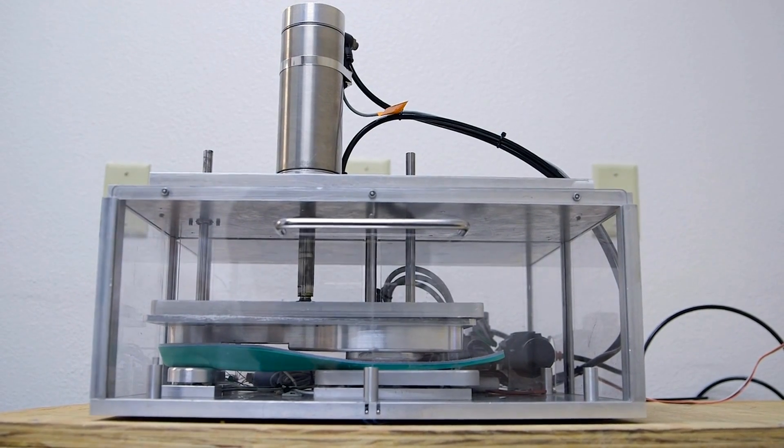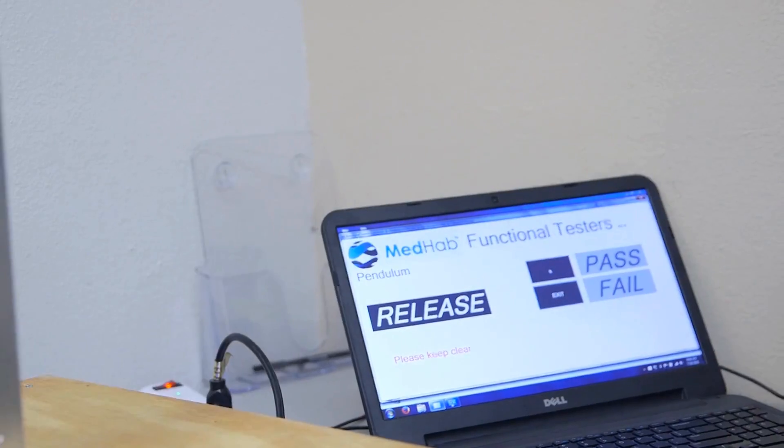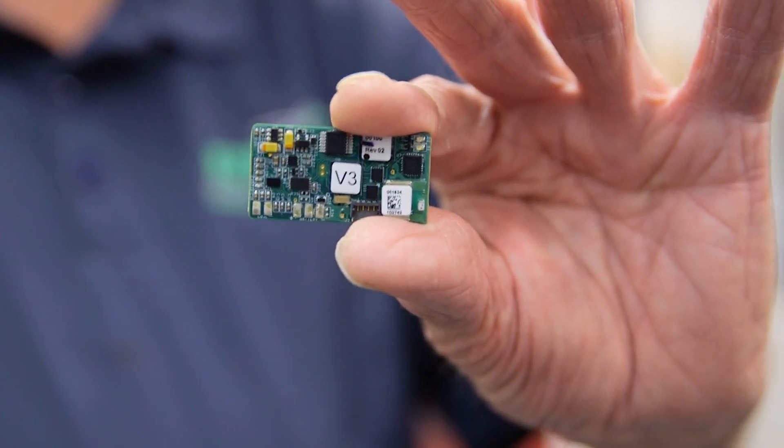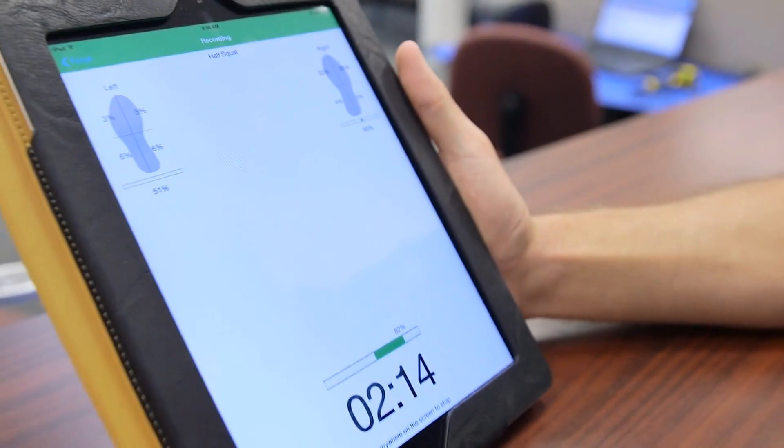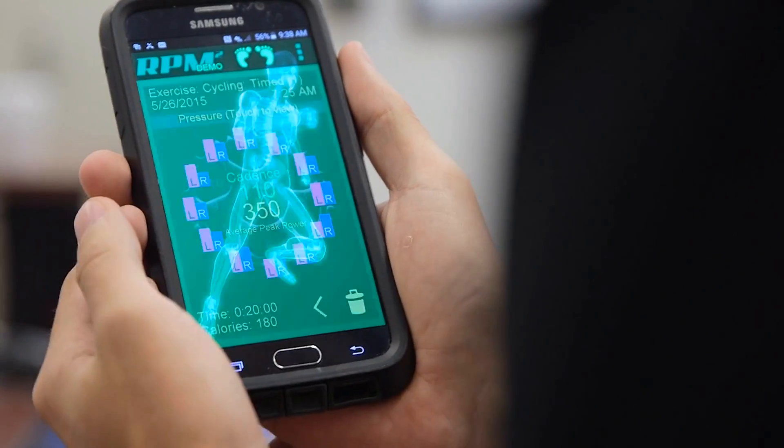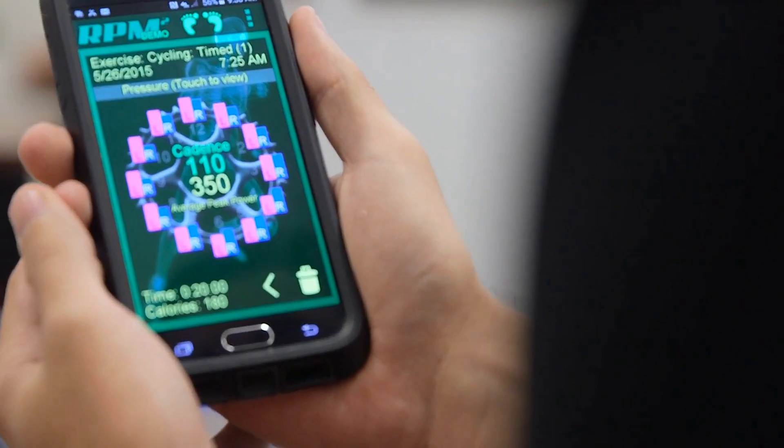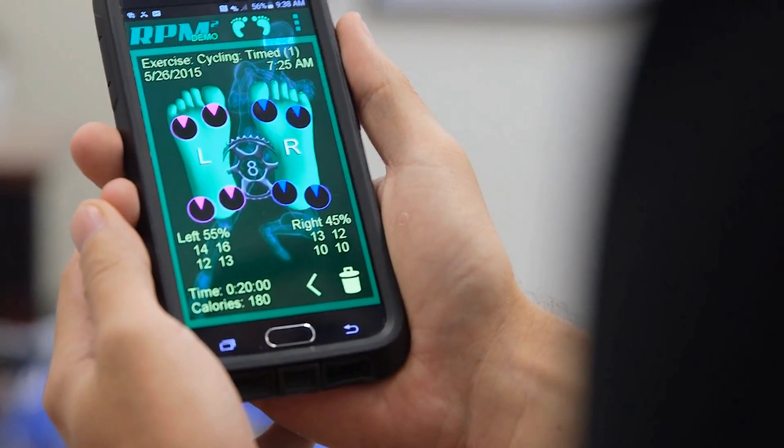What makes RPM Square, or this technology, unique is the fact that we make all the measurements from the footbed. It's all done wirelessly, so it could be used anywhere in the world by any athlete or any patient, and the data is sent encrypted back to where it needs to go, either to a coach or to a healthcare provider.